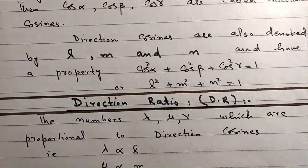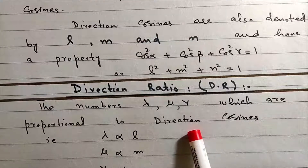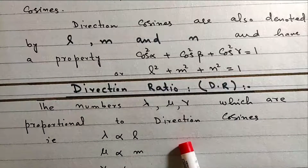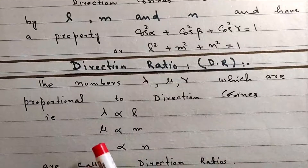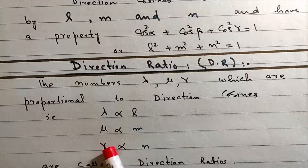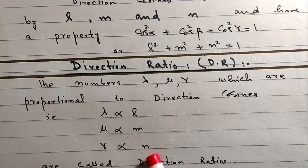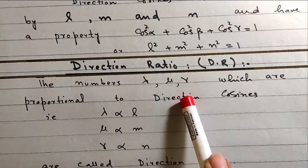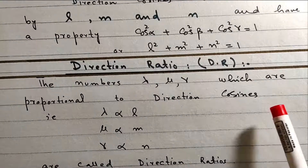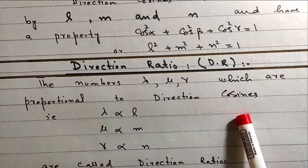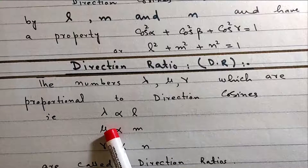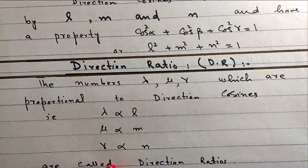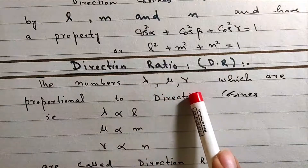Direction Ratio: The numbers lambda, mu, gamma which are proportional to direction cosines — that is, lambda is proportional to L, mu is proportional to M, and gamma is proportional to N — then lambda, mu, gamma are called direction ratios.